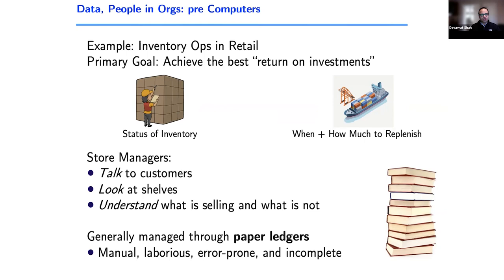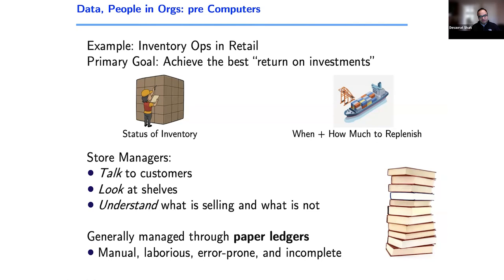I'll walk you through a simple example of how to think about making retail or inventory operations a better financial instrument using AI and data. Then, as we go through that process, we'll talk about how a no-code tool can help. Finally, I'll show you an example outcome of what you can build with something like a no-code tool like Ikikai Labs. For explaining this example, I want you to imagine you're running a shoe shop in Manhattan.